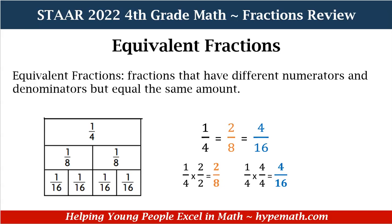Now let's take a look at equivalent fractions. Equivalent fractions are fractions that have different numerators and denominators but equal the same amount. Looking at our example, at the top we have one-fourth, then we have two-eighths, and then it's divided even further into four groups of one-sixteenth, which is four-sixteenths. You may be asking yourself — how did we get that? Great question.